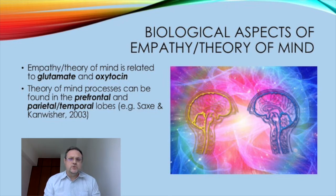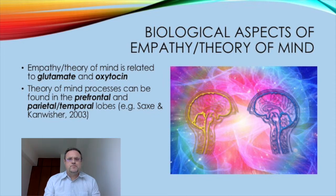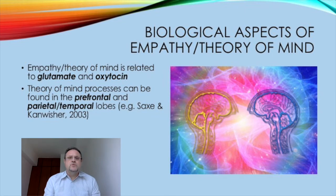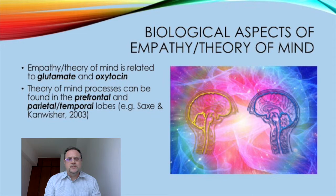Very young children are not so strong at theory of mind because of brain development — there is a biological aspect to it. Some neurochemicals linked to empathy and theory of mind are oxytocin, but also a neurotransmitter called glutamate. Many mental disorders are linked to lack of empathy, possibly due to some kind of brain damage. The most well-known mental disorder linked to undeveloped empathy is, of course, psychopathy.